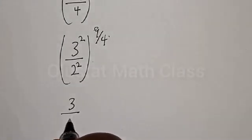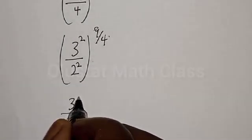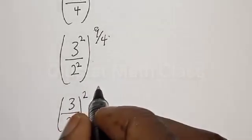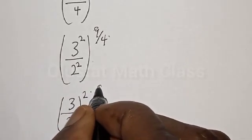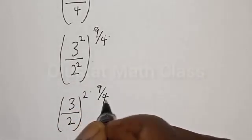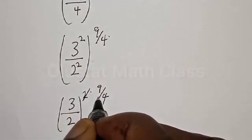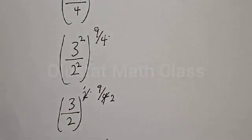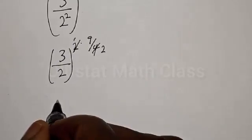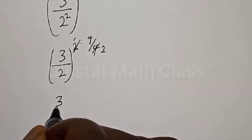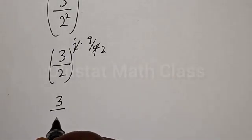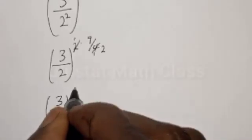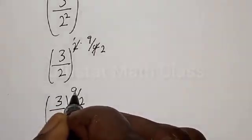That gives us 3 divided by 2, all squared, then multiplied by the exponent 9 divided by 4. Multiplying the exponents 2 and 9/4 gives us 3 divided by 2, all raised to the power 9 over 2.